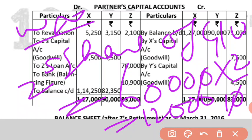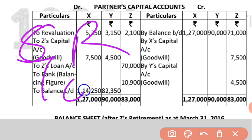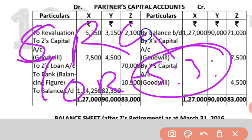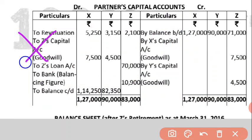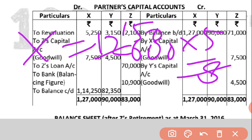This 12,000 will be divided in the gaining ratio. The old ratio is 5:3:2 and no new ratio information is given since Z is retiring. So the gaining ratio of X and Y will be 5:3. Dividing 12,000 in ratio 5:3: X's share = 12,000 × 5/8 = 7,500.